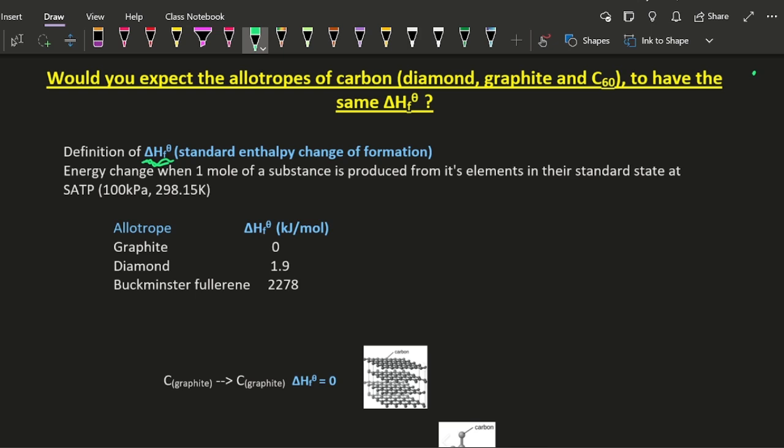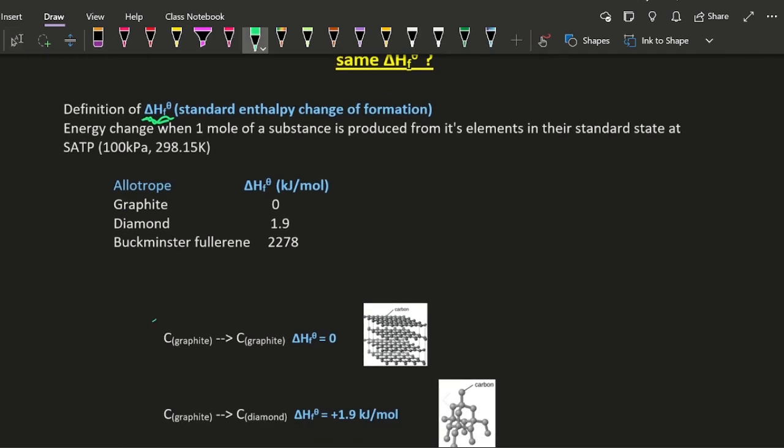So the standard state of carbon is graphite. So if I turn graphite into graphite, essentially achieving nothing, the standard state into graphite - it is the standard state - then it comes out at zero. There's no enthalpy change there.